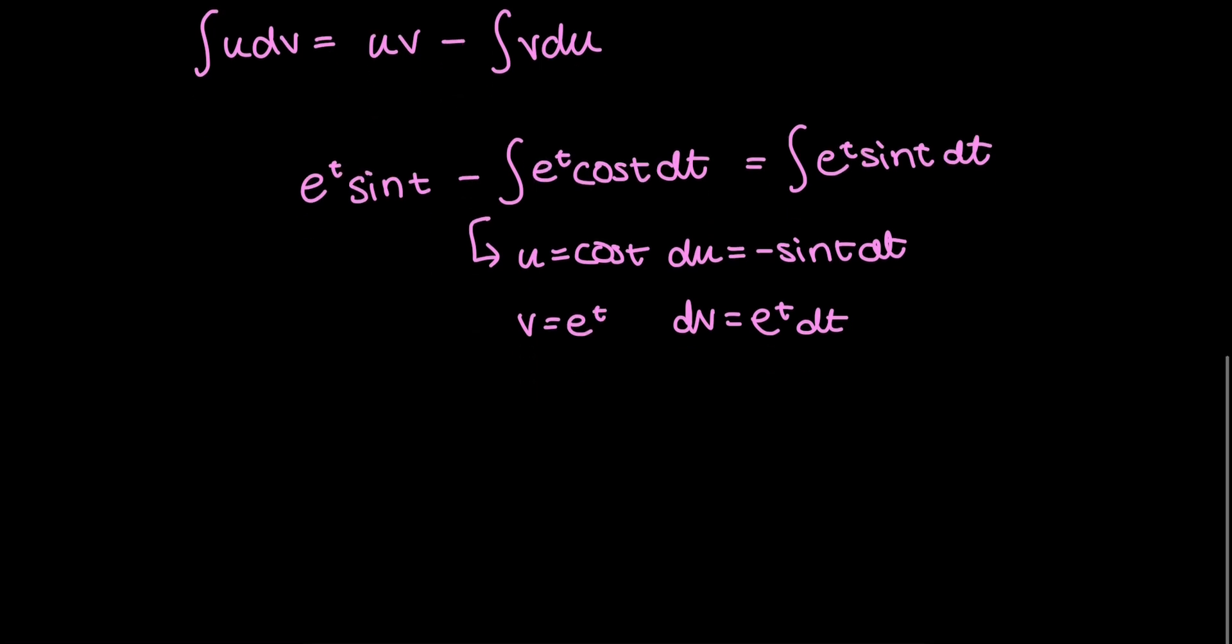And now, plugging this all back into the definition of integration by parts, and leaving this e to the t sine t term outside. So this becomes e to the t cosine t minus, and a minus makes a plus, the integral of e to the t sine t dt is all equal to the integral of e to the t sine t dt.